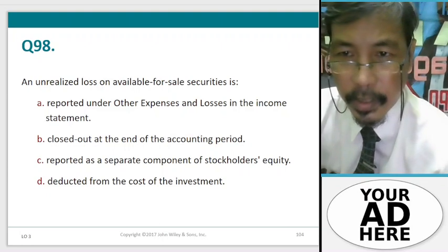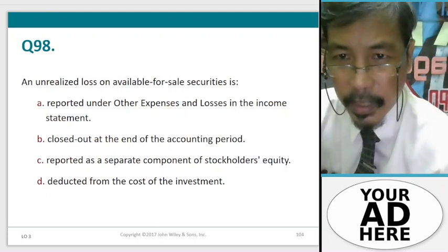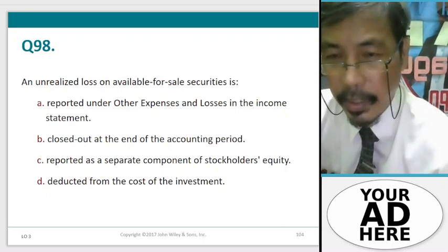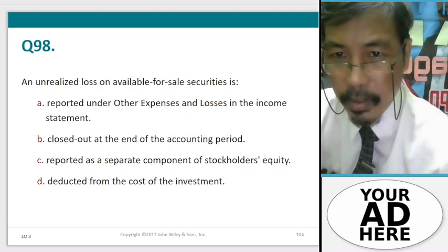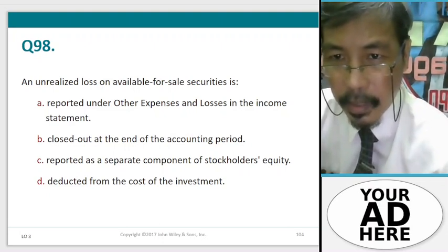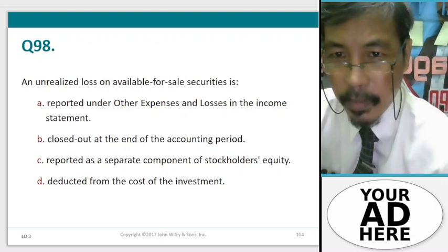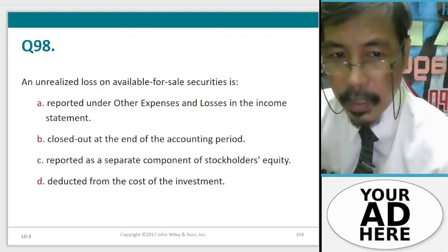Question 98. An unrealized loss on available-for-sale securities is: A. Reported under other expenses and losses in the income statement, B. Closed out at the end of the accounting period, C. Reported as a separate component of stockholders' equity, D. Deducted from the cost of the investment.